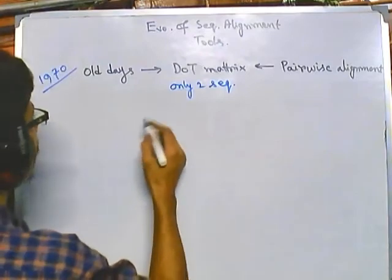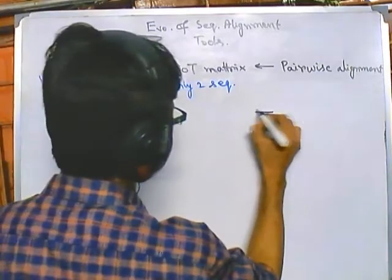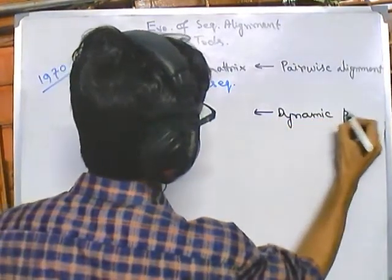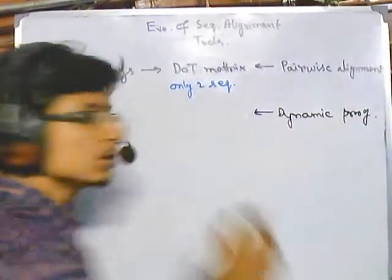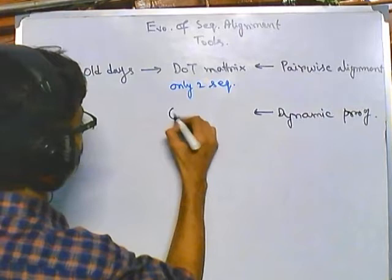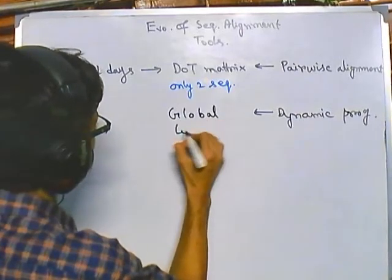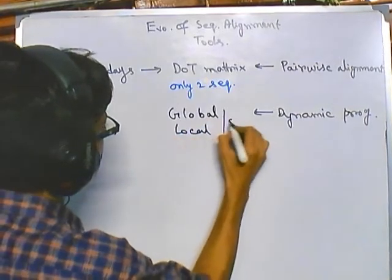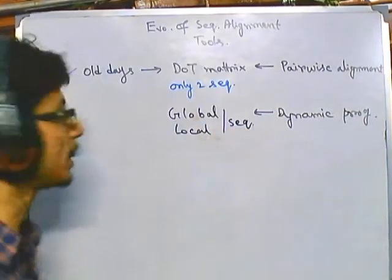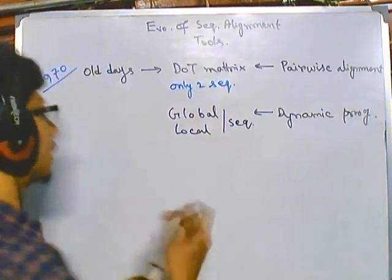After that it was modified further, and that modification led to the generation of dynamic programming alignment. Using dynamic programming, we use global and local sequence alignment. Global and local sequence alignment were implemented during the 1980s.